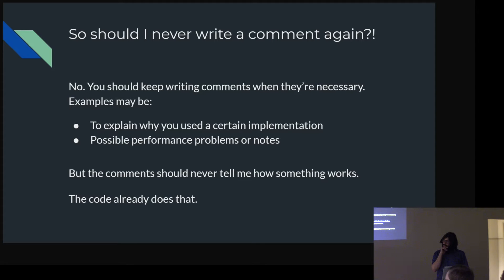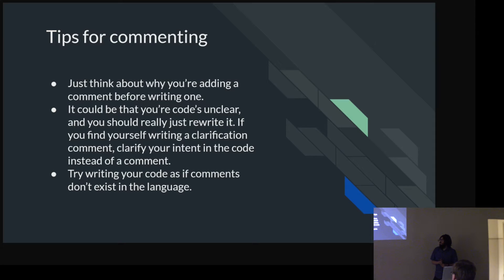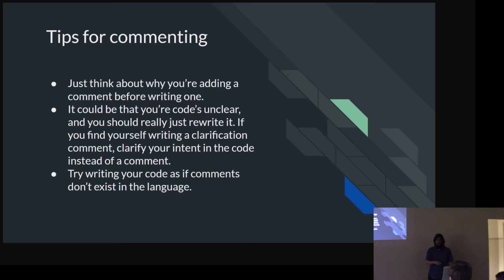Comments should never tell me how something works because the code's already doing that. Think about why you're adding a comment before you write one. Most of the time it just means your code is unclear and should be rewritten more clearly. One thing I like to do: I try to write code as if comments don't exist in the language. I write my notes in a separate document, and if I absolutely feel it's necessary I'll go back. Most of the time I don't actually need to — I can just go back and make the code clearer.